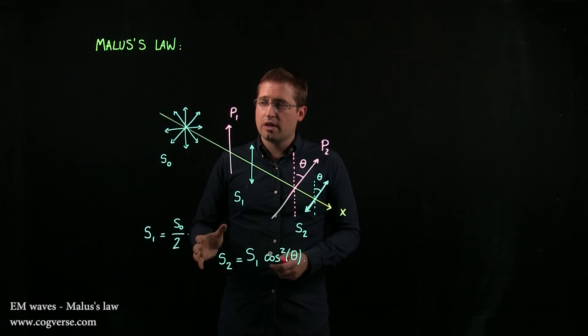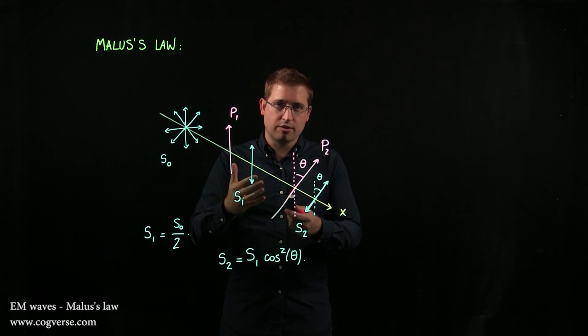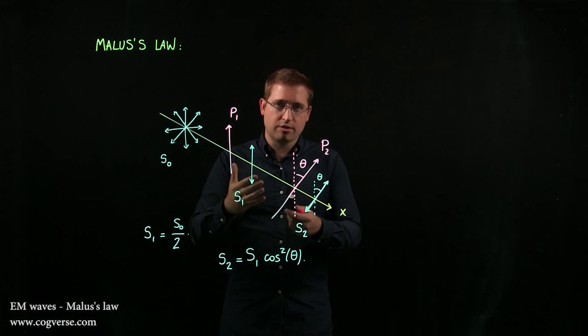Either you have unpolarized light, and if you have polarized after the polarizer P1, then your intensity is halved. If you went from polarized to polarized with a rotation, then S2 equals S1 cosine squared of theta.